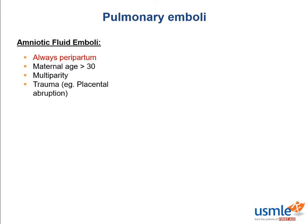Risk factors include age above 30, multiparity, and trauma — essentially anything that would make the amniotic membrane weak and thin, such as going through multiple labors or a traumatic incident like placental abruption. Patients present in a way that resembles anaphylaxis, called an anaphylactoid reaction, causing cardiorespiratory collapse manifesting as hypotension and shortness of breath. Systemic inflammation can also cause disseminated intravascular coagulation, or DIC.